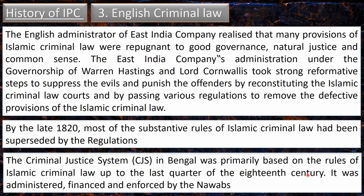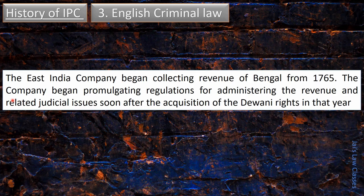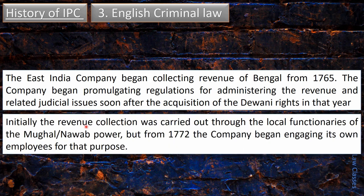The criminal justice system in Bengal was primarily based on Islamic criminal law. Up to the last quarter of the 18th century, it was administered, financed, and enforced by the Nawabs. Since British criminal law was not as harsh as Muslim law, the public accepted it and the British East India Company became stronger. The East India Company began collecting revenue in Bengal from 1765, and began promulgating regulations for administering revenue and related judicial issues soon after acquiring the Diwani rights. From 1772, the company began engaging its own employees for revenue collection.